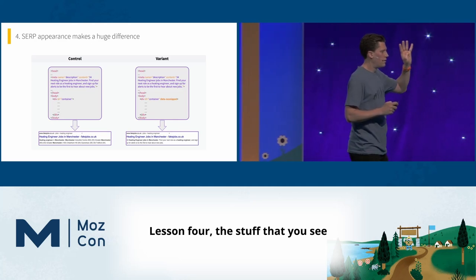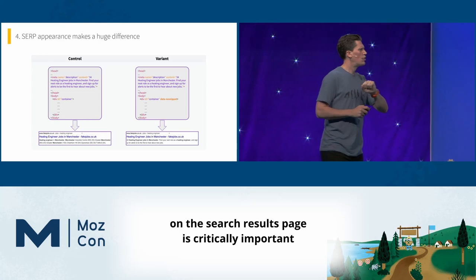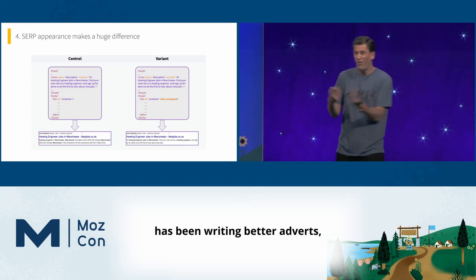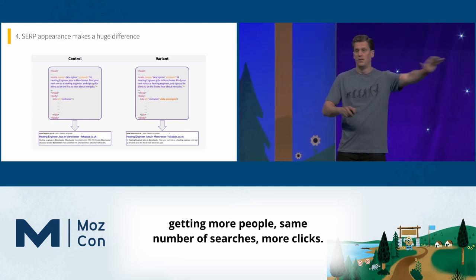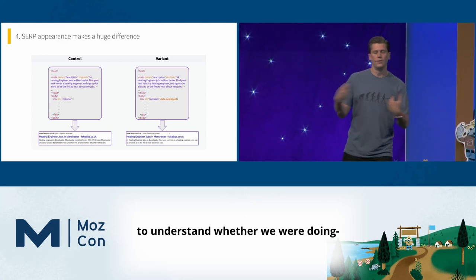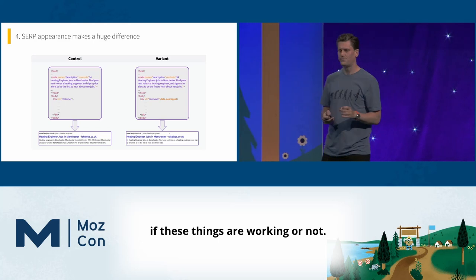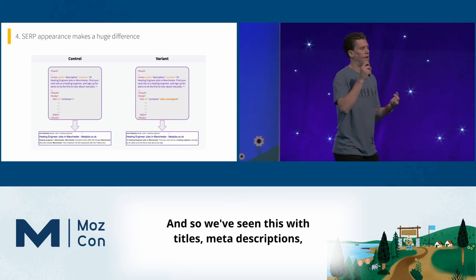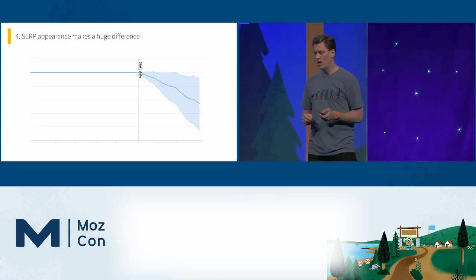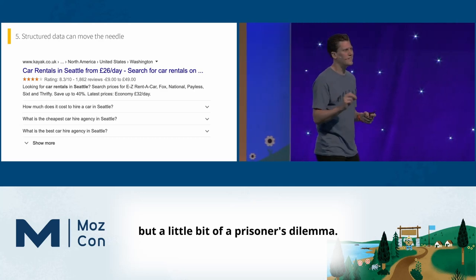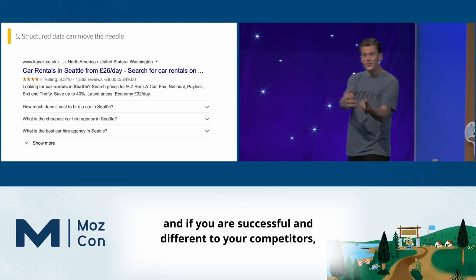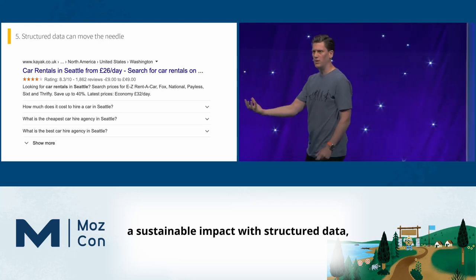Lesson four: the stuff you see on the search results page is critically important. Everybody with paid search colleagues knows how much of the job has been writing better ads, getting a better click-through rate, same number of searches, more clicks. And yet this has been criminally under-invested in SEO, in part because we didn't have the tools. We've seen this with titles, meta descriptions, and structured data. Structured data can be very powerful, but it's a bit of a prisoner's dilemma — it mainly works when you're different to your competitors, and if you're successful they're just going to copy you. So it's hard to have a sustainable impact, but you need to do it or they'll get the advantage over you.